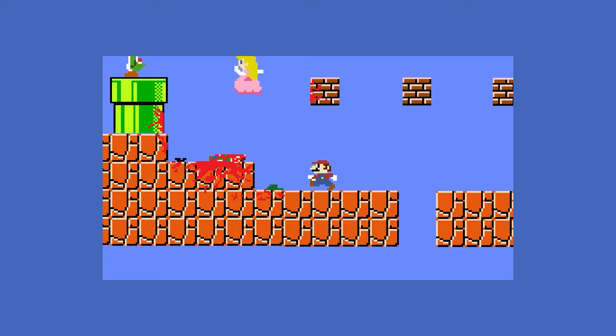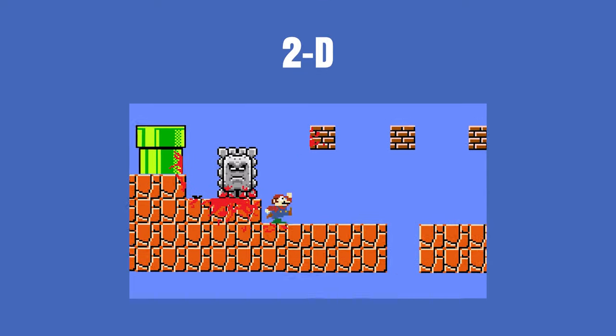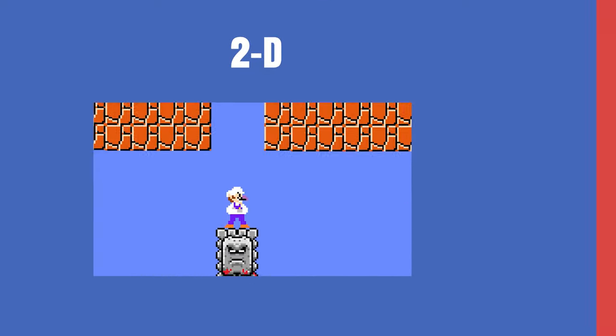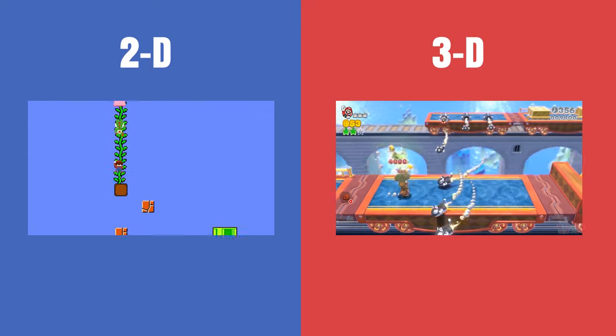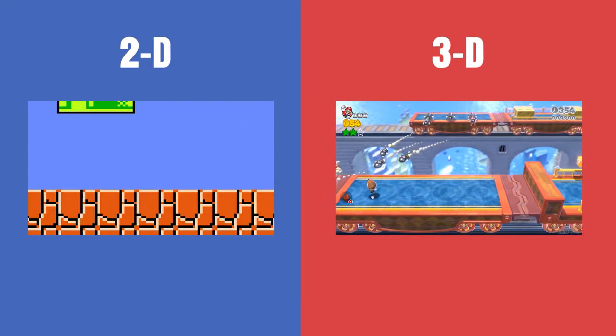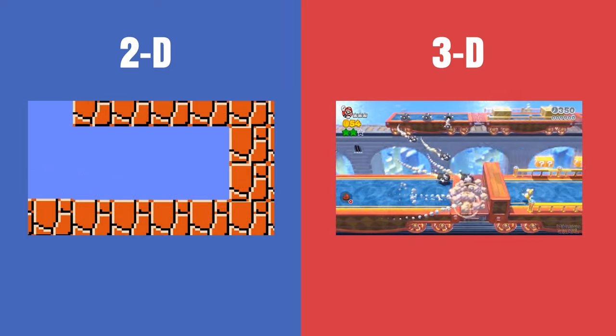A great example of using two or three dimensions is Mario. This is Super Mario Bros. in 2D and only using X and Y. And this is Super Mario 3D World. The name already implies it. They're using three dimensions. X, Y, and Z.